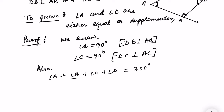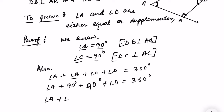Angle B is 90 degrees, so I can write: angle A plus 90 degrees plus angle C plus 90 degrees plus angle D equals 360 degrees. Angle C is also 90 degrees. So angle A plus angle D equals 360 minus 180, which gives angle A plus angle D equals 180 degrees.